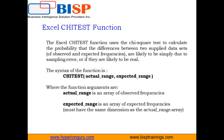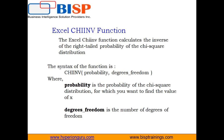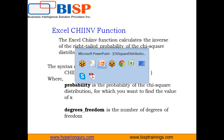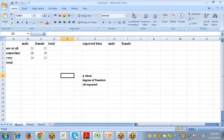The second function is CHIINV, which is used to create confidence interval estimates of a population variance. This function takes two arguments: the first is the probability of the chi-square distribution, and the second is the number of degrees of freedom. Let's go ahead with the example to understand how the test of association is calculated in Excel.